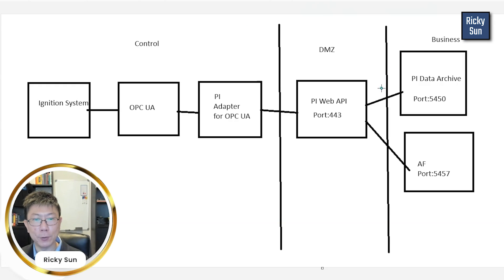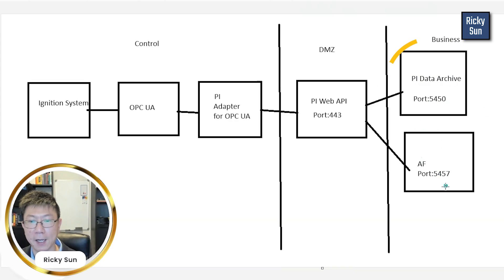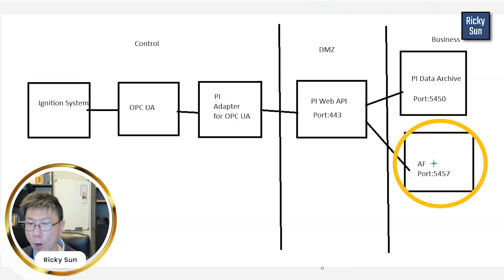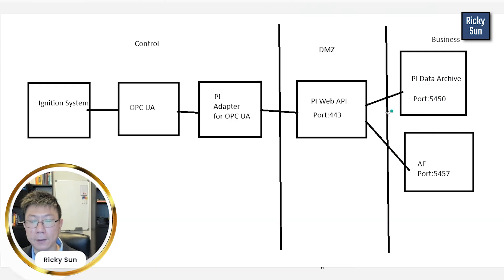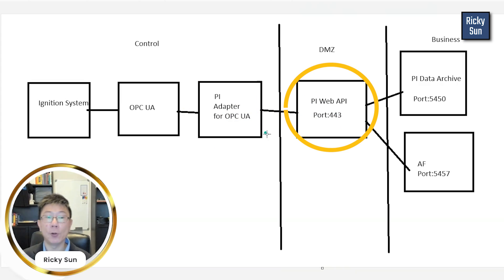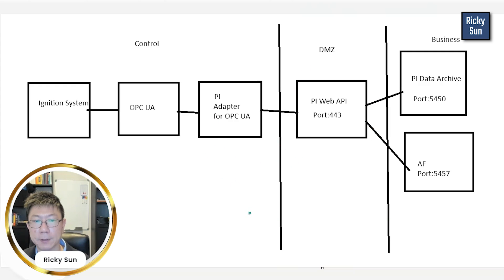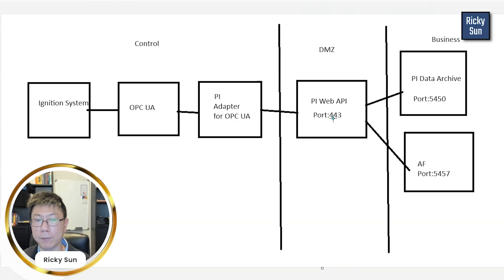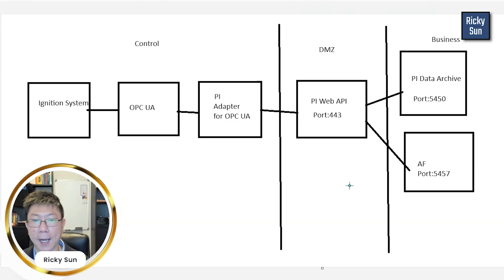That's why we chose that architecture. The PI Data Archive and AF ports should already be open, so you don't have to worry about those — when you have an interface they should already be open. All you need to worry about is the adapters and the PI Web API. If you want high availability, you can set up two adapters on the same network and install a network load balancer with two PI Web APIs to achieve HA.